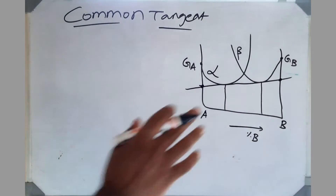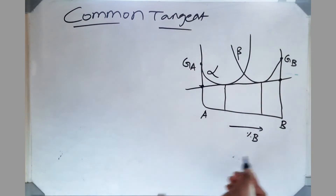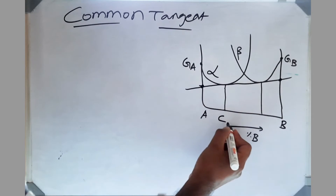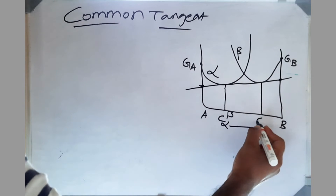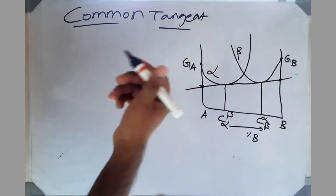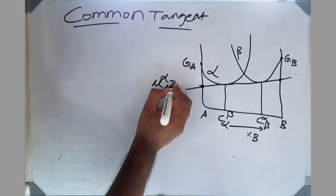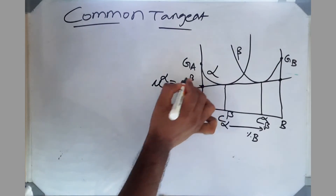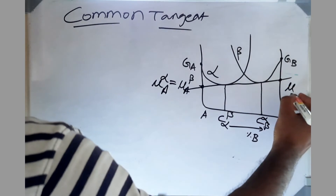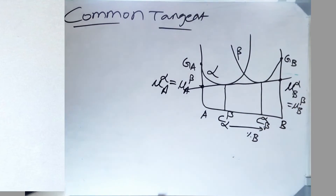Let's look at the common tangent for a two-phase mixture of alpha and beta, where A and B are the constituents. Drawing a common tangent gives the equilibrium composition of alpha in equilibrium with beta, and the composition of beta in equilibrium with alpha. The y-axis intercepts of the tangent line represent chemical potentials: the left intercept is the chemical potential of A in alpha equals chemical potential of A in beta; the right intercept is chemical potential of B in alpha equals chemical potential of B in beta. This equality of chemical potentials defines phase equilibrium.